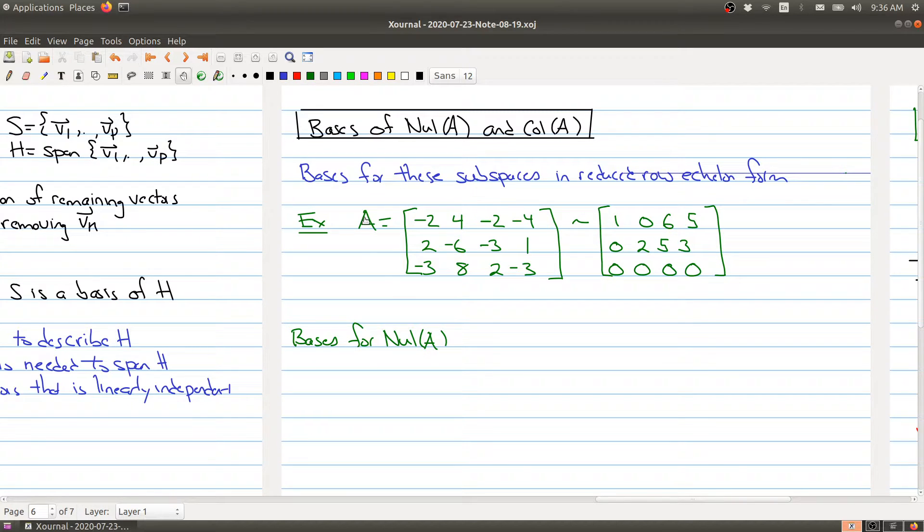Let's say I gave you a matrix A, and we're trying to find a basis for both the null space and the column space. The first thing you need to do is put it into row reduced echelon form. We're going to need to know where the pivot columns are. So we have two pivot columns right here and here. We also need to know which variables are free. So x3 and x4 are free variables in this case.